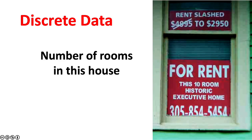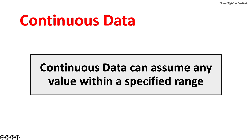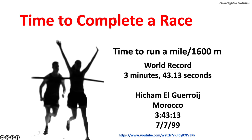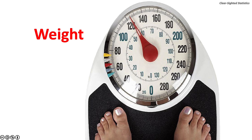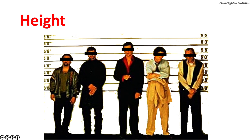The number of rooms in a historic 10-room executive home is discrete data. Continuous data can assume any value within a specified range. The time to complete a race is an example of continuous data, because a second can be measured in an infinite number of sub-segments. Air pressure is a continuous variable — the air pressure in a tire is measured in pounds per square inch and there are an infinite number of tire pressures between 35 and 36 pounds per square inch. Your weight and height are also examples of continuous data — the space between 124 and 125 pounds is infinite, and a man may say he's six feet tall but there are an infinite number of fractional inches above and below six feet.